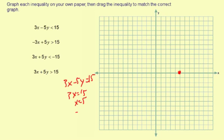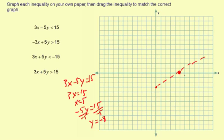Then for y: negative 5y equals 15, divide by negative 5, you get y equals negative 3. Put a dot at negative 3. Now looking back at the inequality, notice that you have less than with no equal to — that means you're going to have a dashed line. So when you draw your line, make sure you dash it.